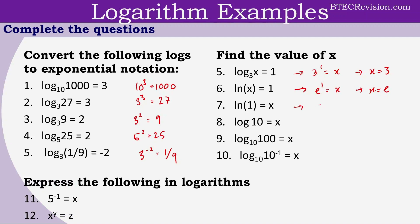Question 7, we have another base E. E to the power of x equals 1. Now if you remember from last lesson, any number to the power of 0 equals 1. So therefore, x has to be 0. Question 8, we don't have a base written here, so we assume it to be 10. So 10 to the power of x equals 10. Therefore, x must equal 1.